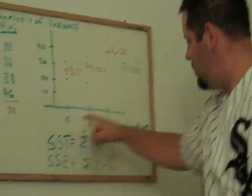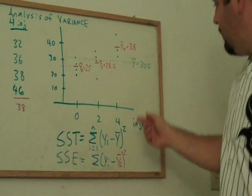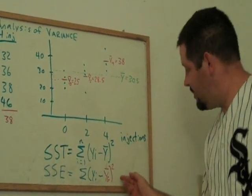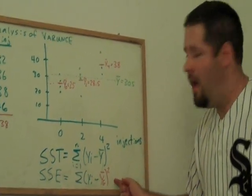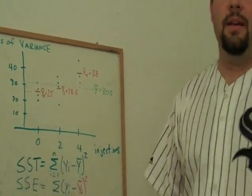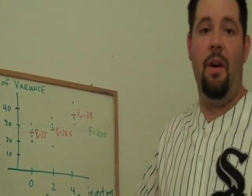And as you know, these are all about variance. This tells us about the total variability. This tells us about the unexplained variability. And their difference, the sum of squared treatment, tells us about the explained variability.